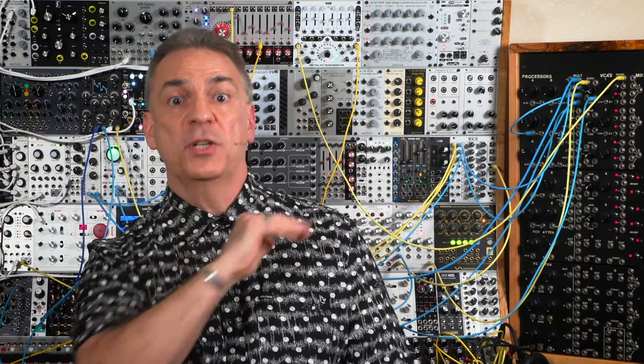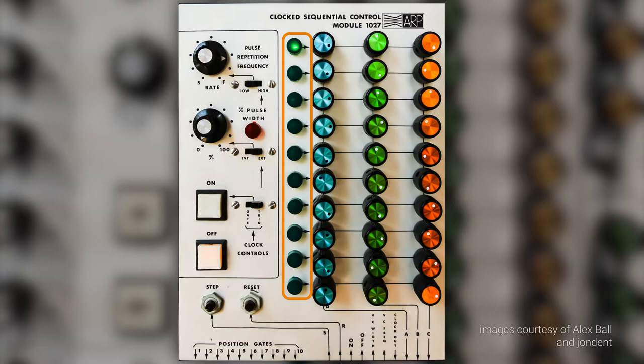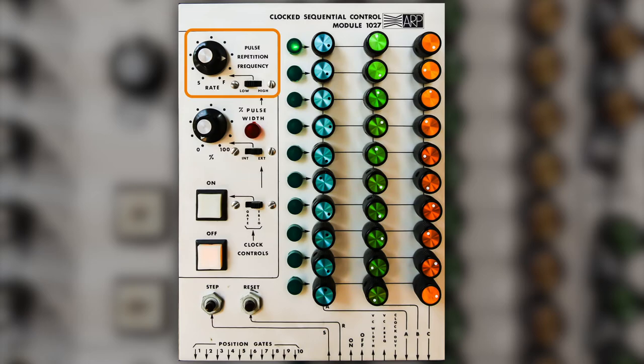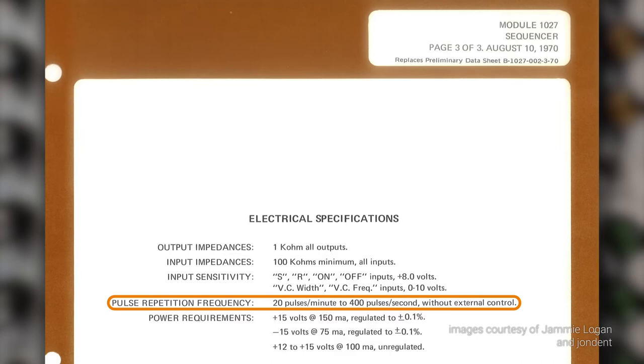The ARP Module 1027 Clocked Sequential Control featured 10 steps, or positions, with controls to set three different voltage output settings per position. It too could be stepped through its positions using an external trigger, or by using its internal voltage-controlled clock with a pulse repetition frequency that could go from 20 steps or beats per minute to 400 steps per second, well into the audio range.